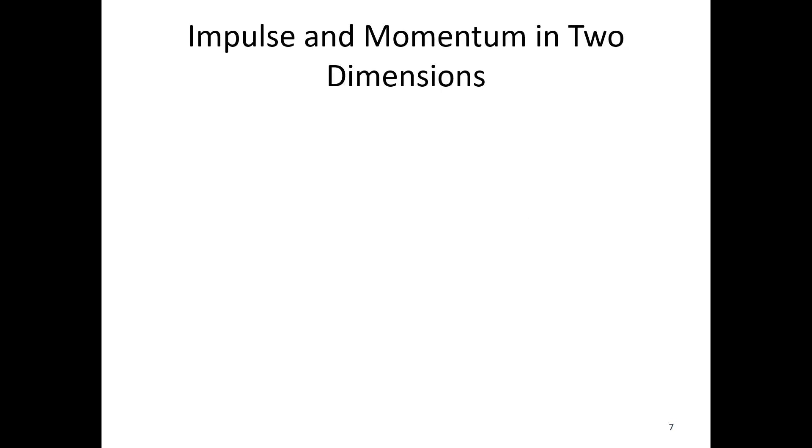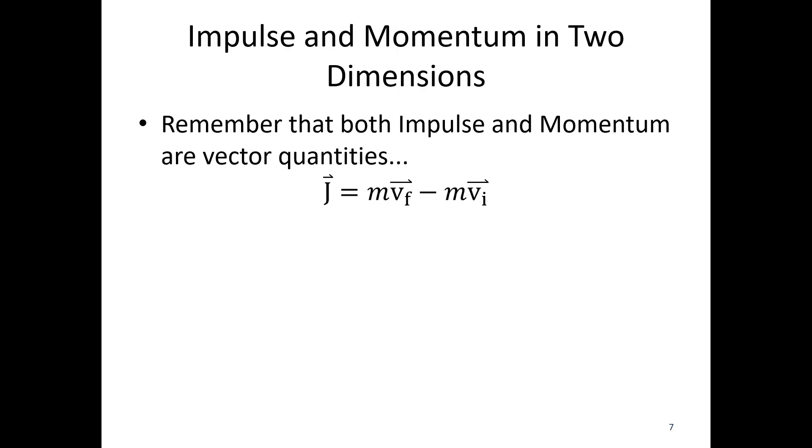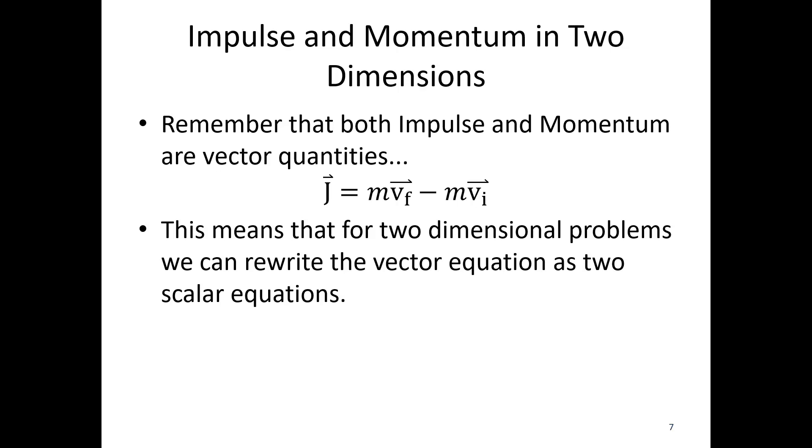All right, so, impulse and momentum in two dimensions. Remember that both impulse and momentum are vector quantities. So, our equation is this, but that means for two-dimensional problems, we can rewrite the vector equation as two scalar equations. So, impulse can be broken down into x and y components and momentum, specifically the velocity component of momentum can also be broken down into x and y components.